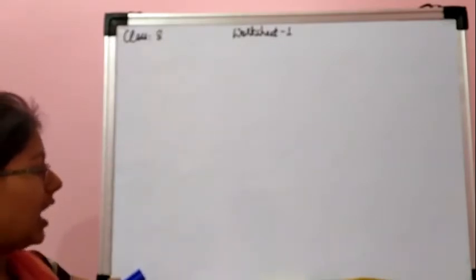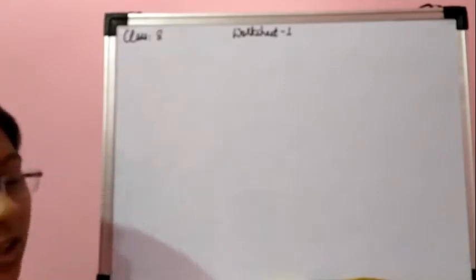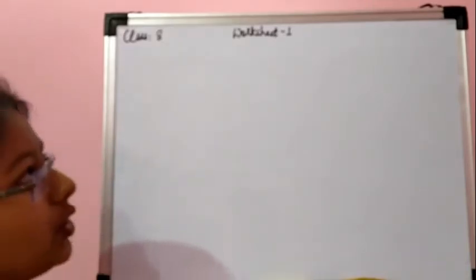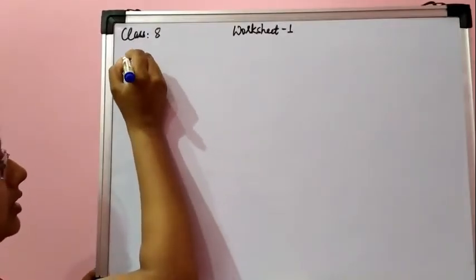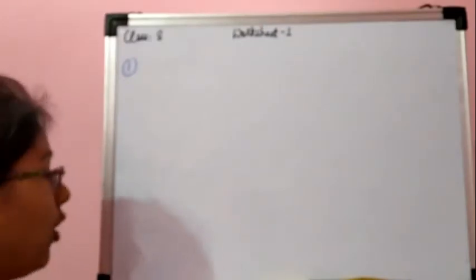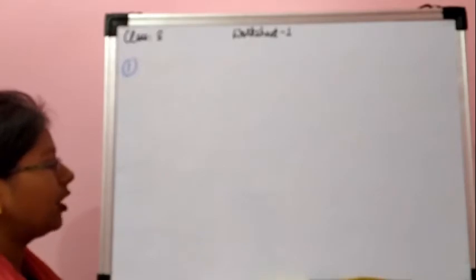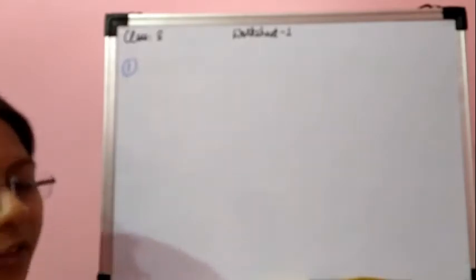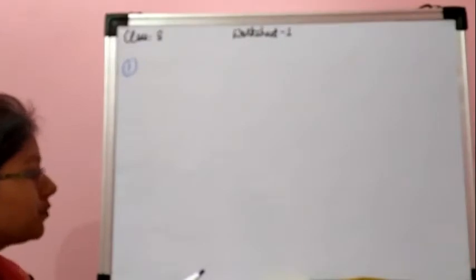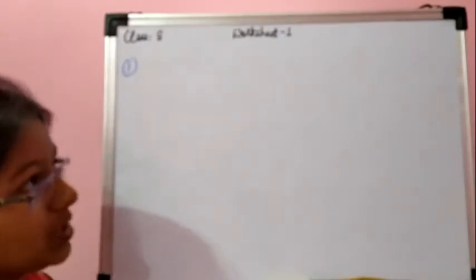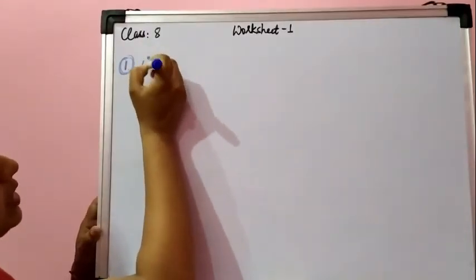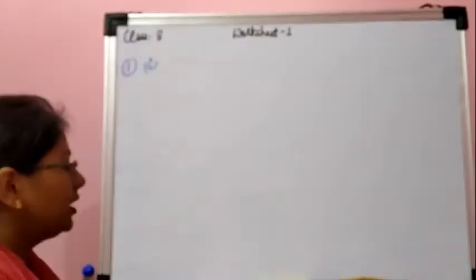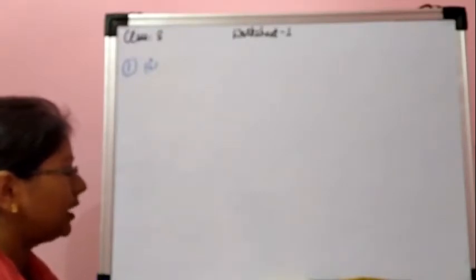First of all I am talking about worksheet 1. In worksheet 1, in the beginning I have given you some important points which you have to write in your notebook, and then answer the following questions. This worksheet 1 was based on the very first video which we have done and the questions are also very simple. So let's discuss these answers so that you all can check whether what you have done is right or wrong.